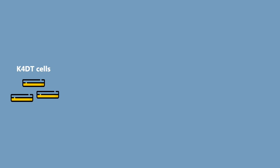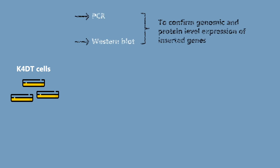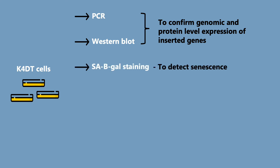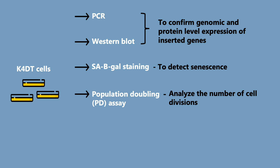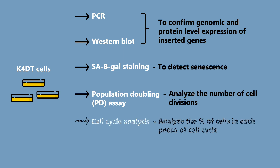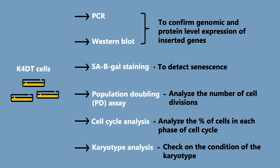We conducted several experiments using the K4DT cells to confirm their immortalization properties. Examples of the experiments conducted are PCR, Western blot, SA-beta-Galactosidase assay, population doubling analysis, cell cycle analysis, and karyotype analysis.